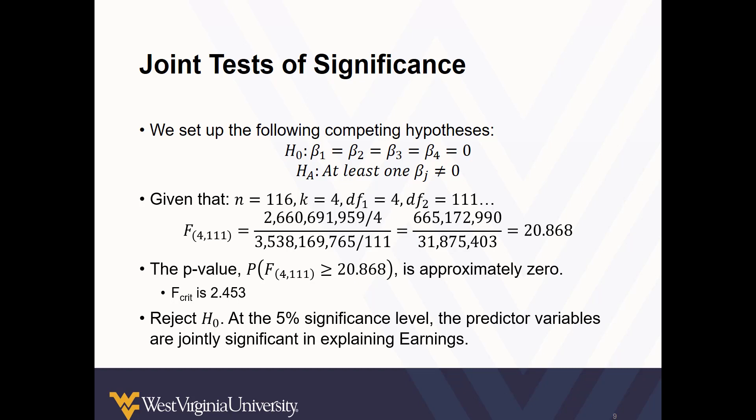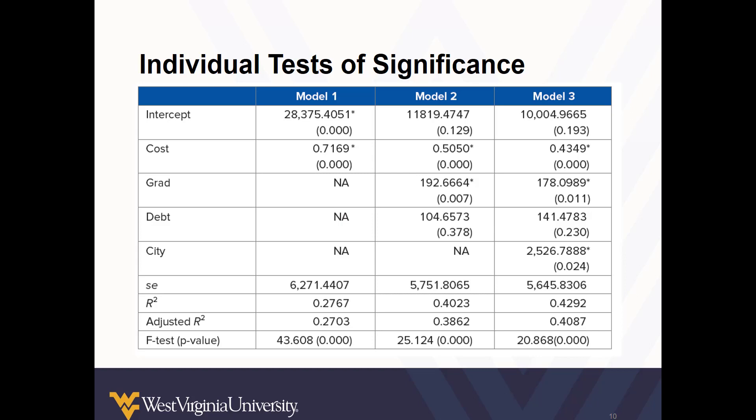So let's look at the individual variables for our three models about post-college earnings. So here are our results for model 1, 2, and 3. And I want you to note that not all of the independent variables in the models are statistically significant. Take a look at the debt variable, for example, which have p-values of 0.378 in model 2 and 0.230 in model 3. Those would not be statistically significant. However, we can look at our f-tests and we find that all three models, the p-values being in the brackets, are significant overall. So to have a valid model doesn't mean that every variable within that model is going to be statistically significant.